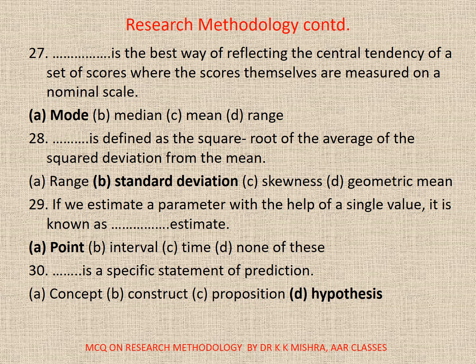Question 29: If we estimate a parameter with the help of a single value, it is known as dash estimate. A. Point. B. Interval. C. Time. D. None. Correct option is A. Point.